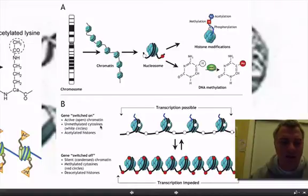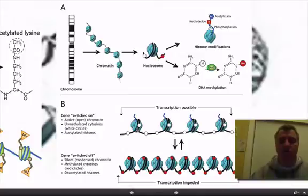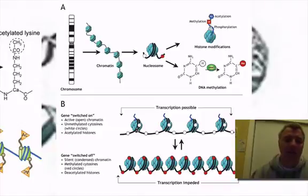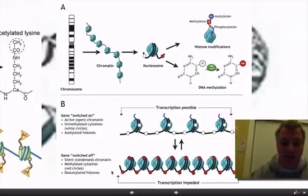Unmethylated cytosines or acetylated histones — both of those will cause that DNA to spread out so that genes can be turned on, so to speak.